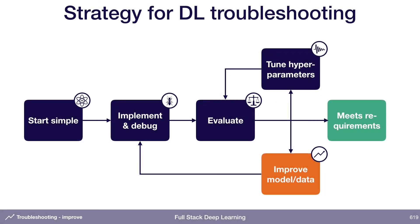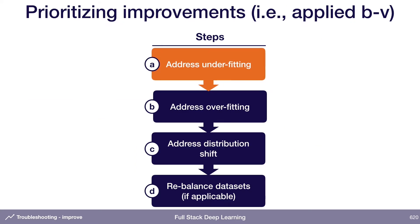You've gone and evaluated your model, done the bias-variance decomposition, and now it's time to figure out what to do next to improve your model. This is the order that I think you should prioritize improvements in. Start by addressing under-fitting — the first thing you should do is make sure that you can actually get to your goal performance on your training set before worrying about over-fitting.